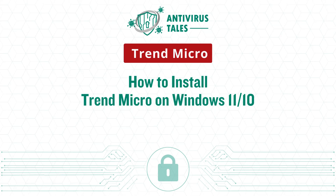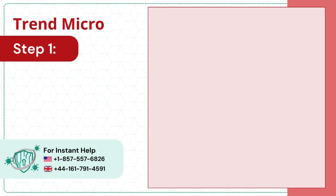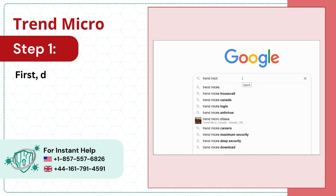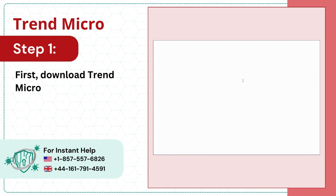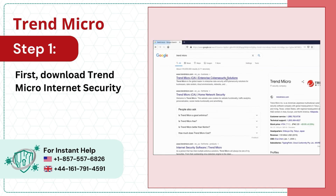How to Install Trend Micro on Windows 11 and 10. Step 1: First, download Trend Micro Internet Security from the official website.